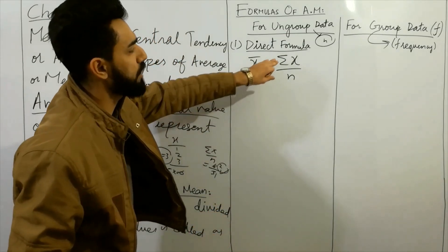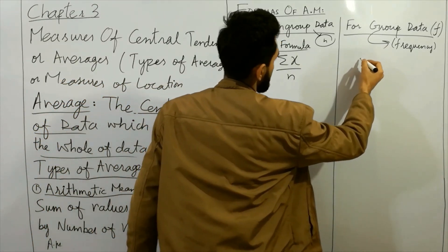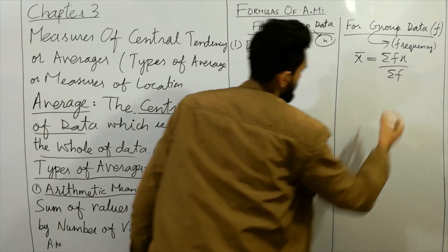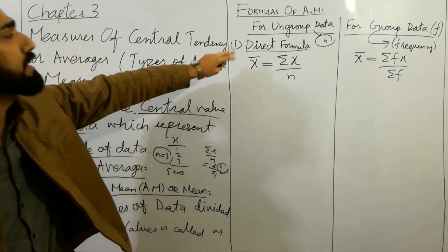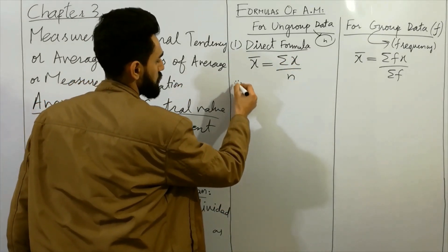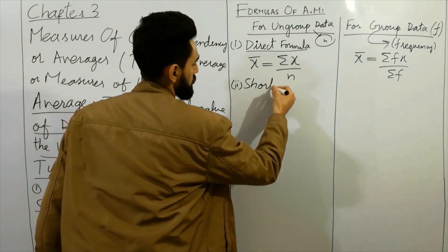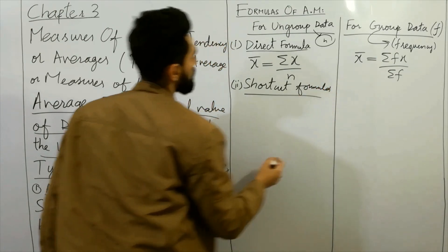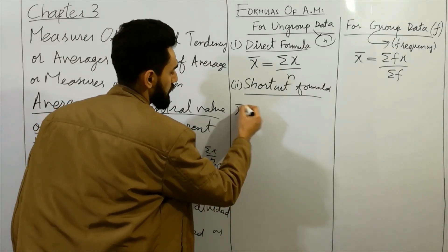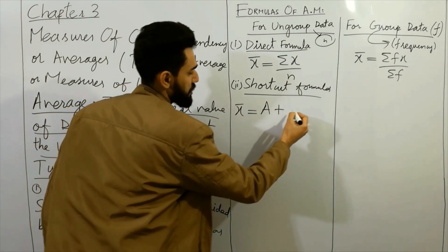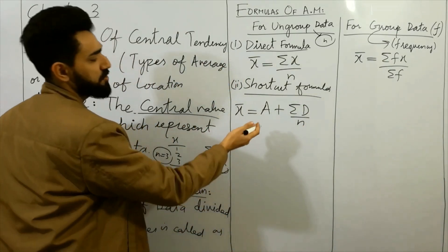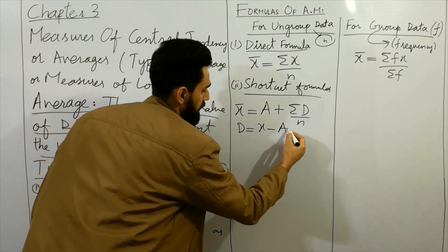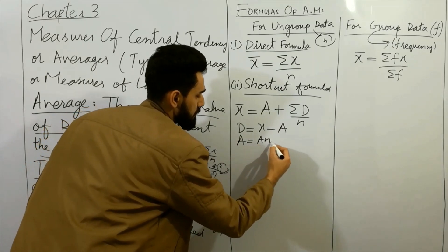That is the direct formula for arithmetic mean. The shortcut formula for ungrouped data is: x̄ = A plus Σd over n, where d = x minus A, and A is any assumed value.